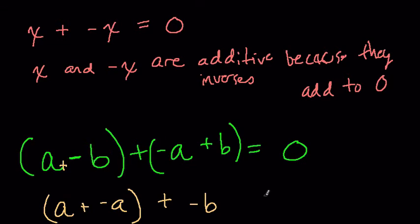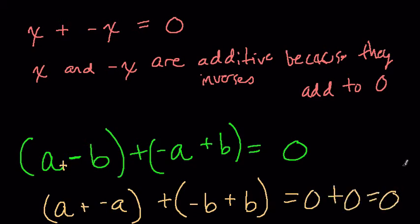Addition, remember, it's commutative and associative. Negative b plus a plus b, or just plus b, is also zero. So zero plus zero is zero. And those are additive inverses because they add to zero.